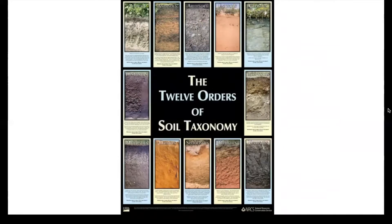The first one are the Gelisols, and Gelisols are soils that are permanently frozen or contain evidence of permafrost near the soil surface. They're found in the Arctic or the Antarctic, as well as extremely high elevations. Gelisols make up about 9% of the world's glacier-free land surface.